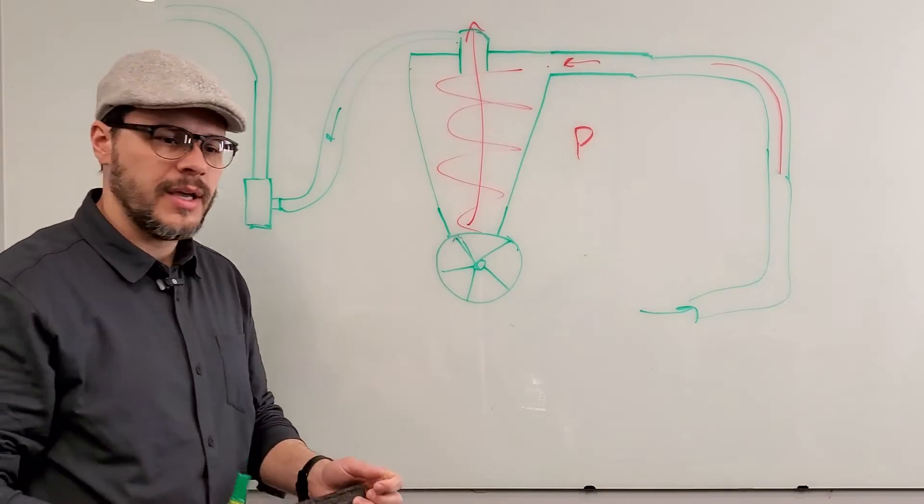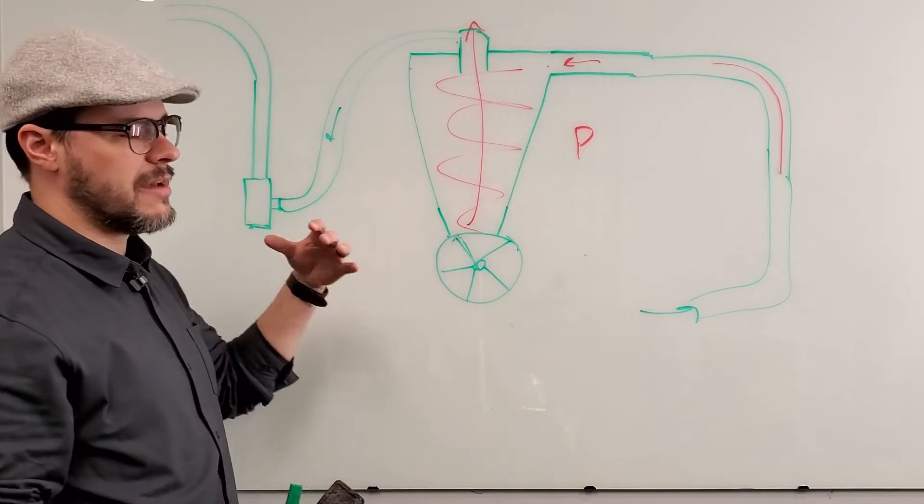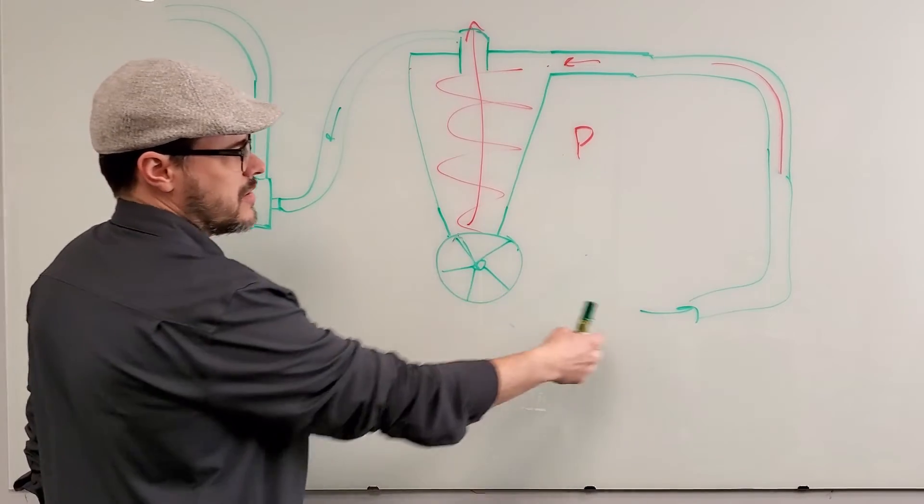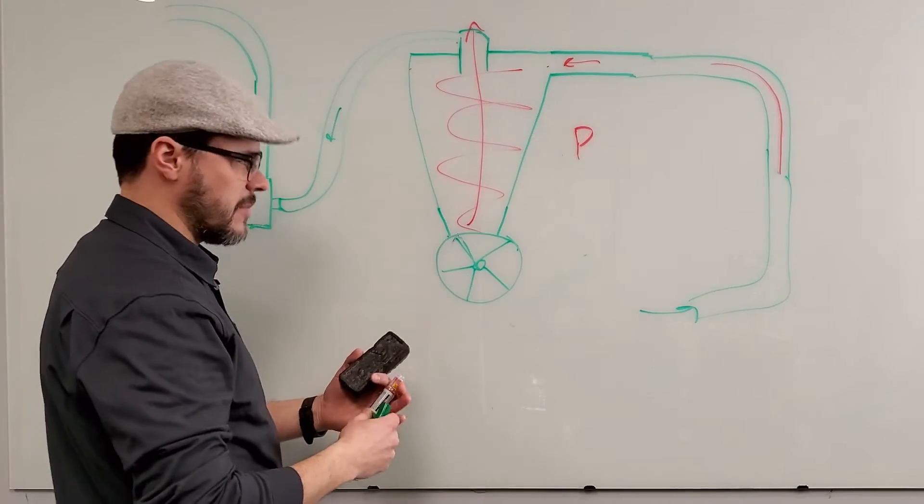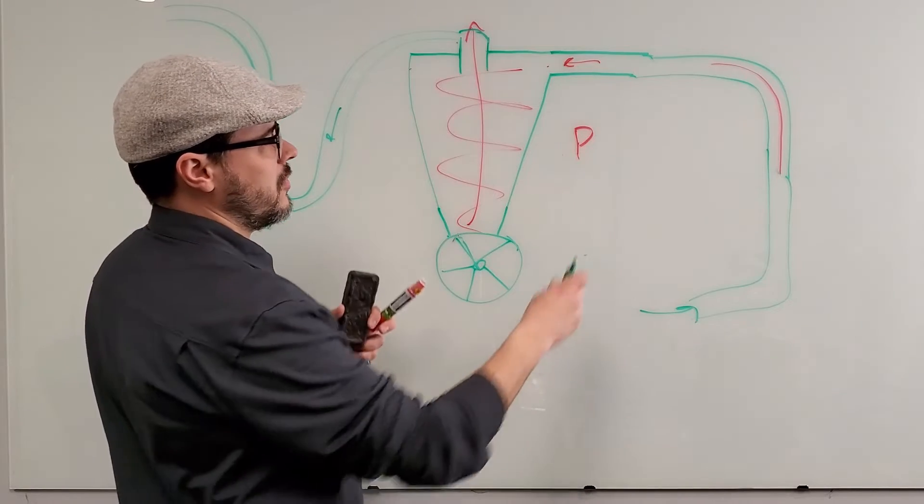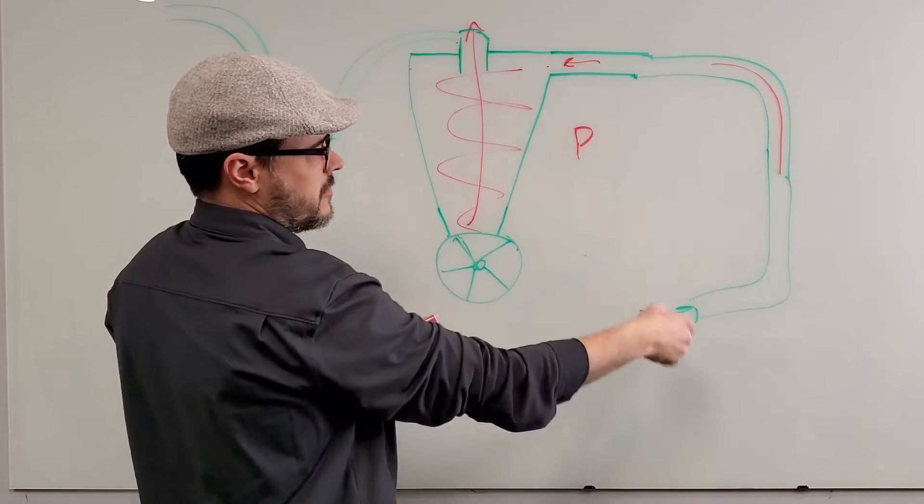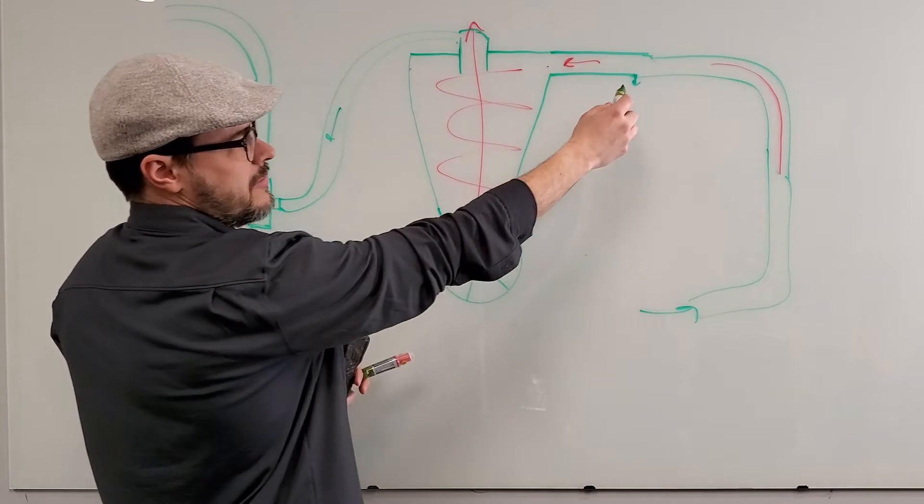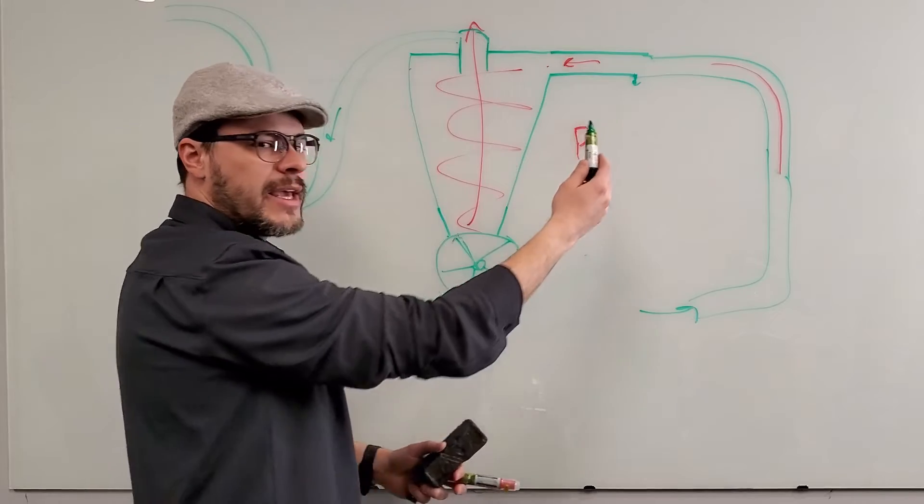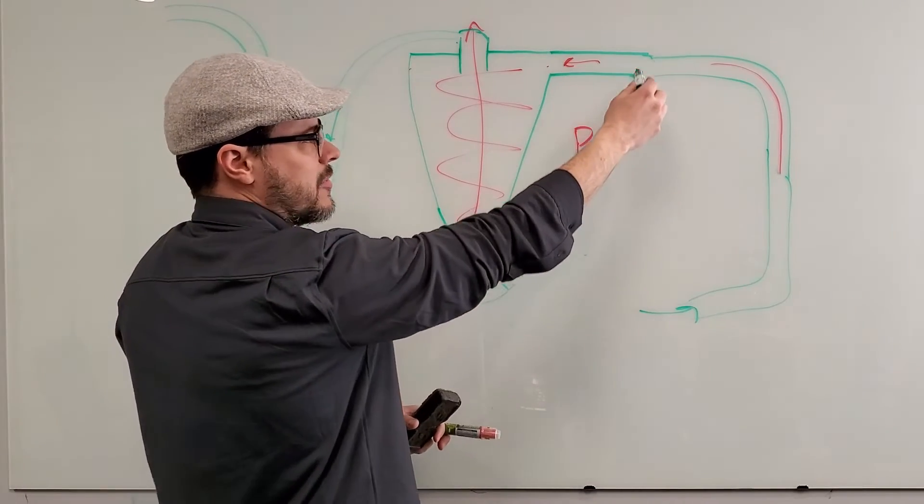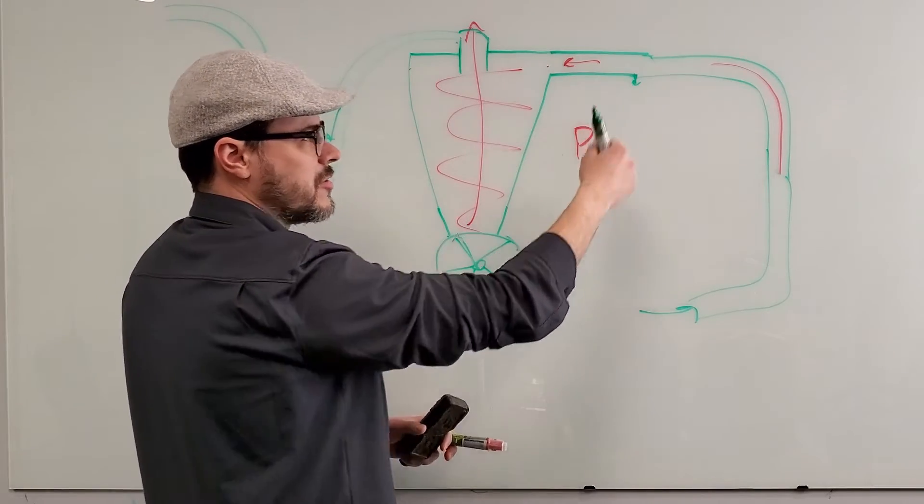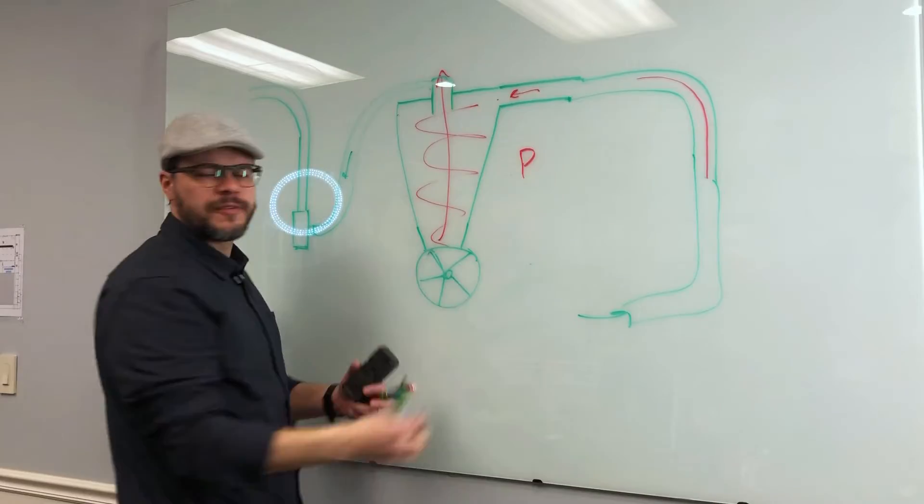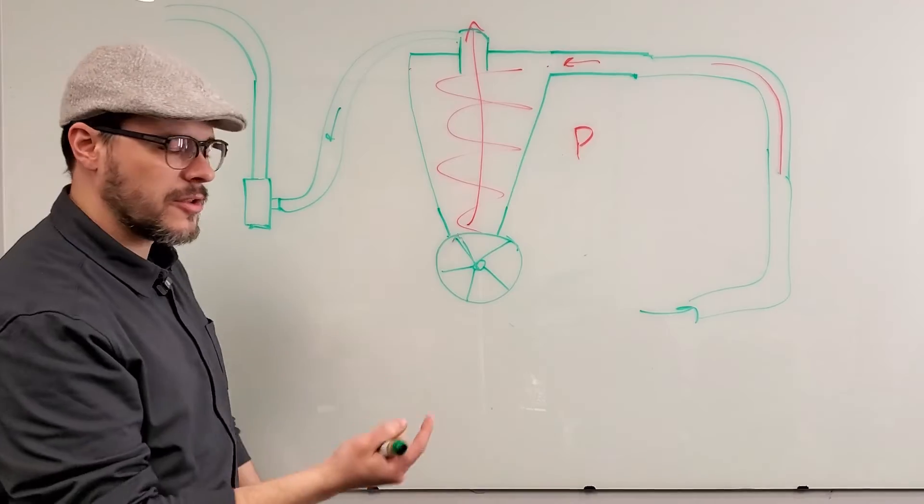This is better in a lot of ways. Number one is you don't have leakage through your system because everything's under vacuum - everything wants to go into it. For example, if you had a hole here and this was under pressure, you would have light dust coming out of this hole. If you have a hole here and you have it under vacuum, you might get heavier particles, copper or whatever, that want to fall out, but you're not going to get air blowing into your environment. So that's number one. Hopefully you don't have any holes in your system - it's a nice sealed system.